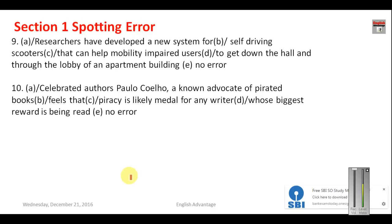Question number nine: 'Researchers have developed a new system for self-driving scooters that can help mobility-impaired users to get down the hall and through the lobby of an apartment building.' In this sentence the preposition is used correctly twice — 'down the hall' and 'through the lobby' — since the nouns are different. 'Mobility impaired' means people who are unable to walk properly or have difficulty walking. This sentence is correct; the answer is E — no error.